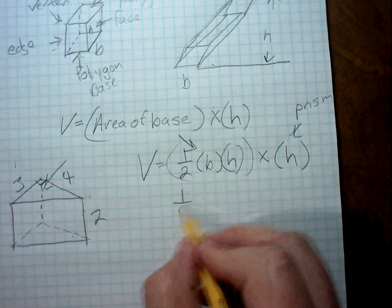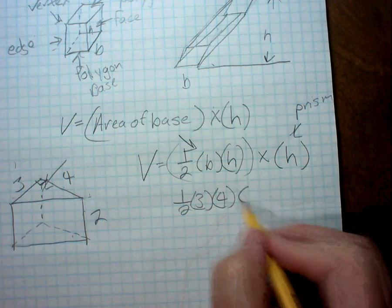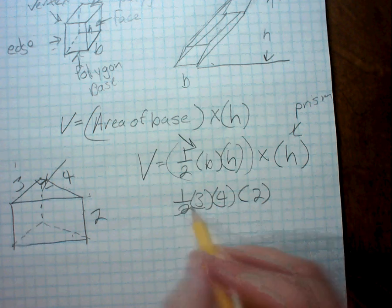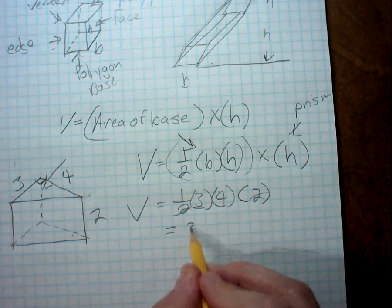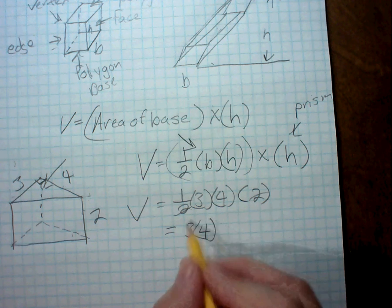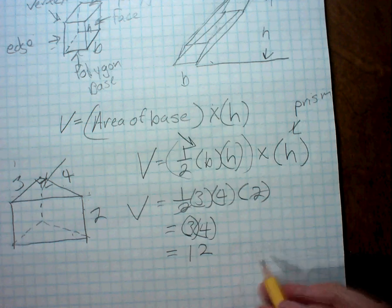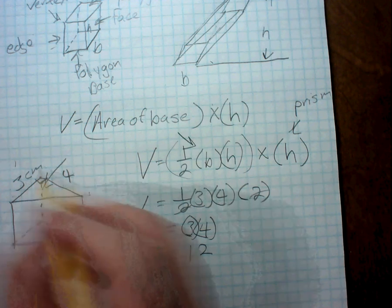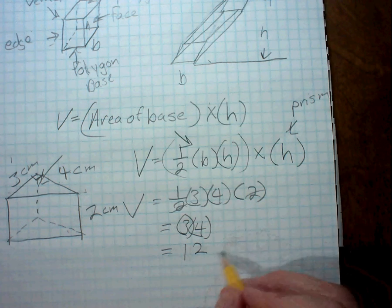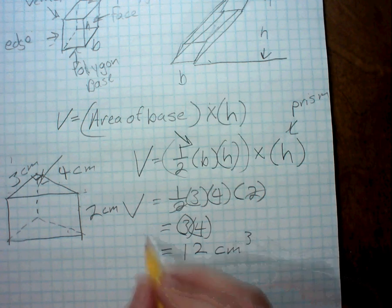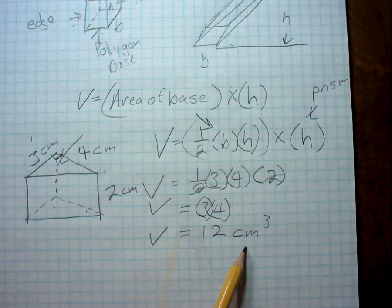So then this would be one half times 3 times 4 times 2. Well, this 2 will cancel with this 2. And then I'm just left with 3 times 4, which should be 12. And this was all in centimeters. So when you have centimeters times centimeters times centimeters, this would be centimeters cubed. So the volume of this prism is going to be 12 centimeters cubed.